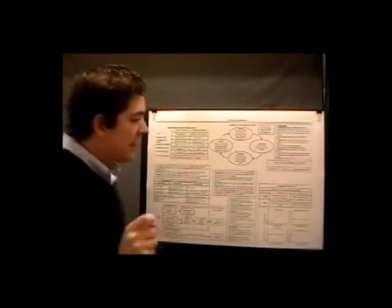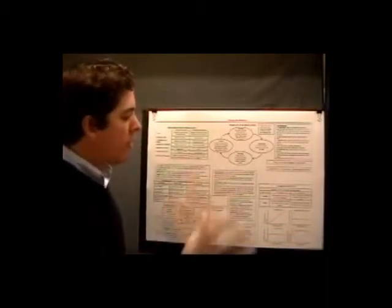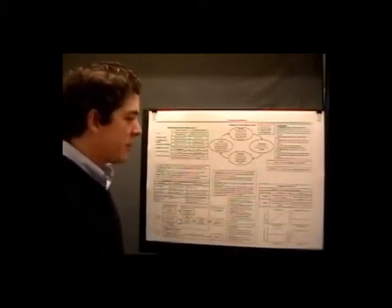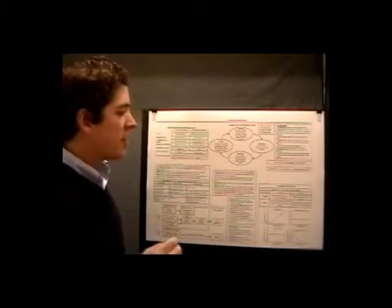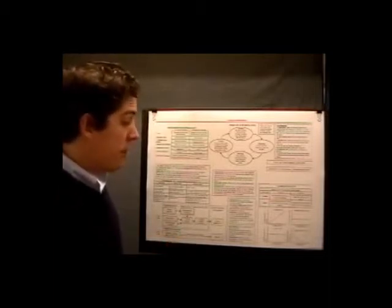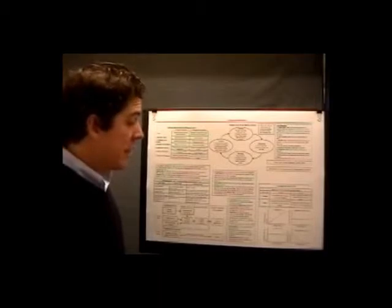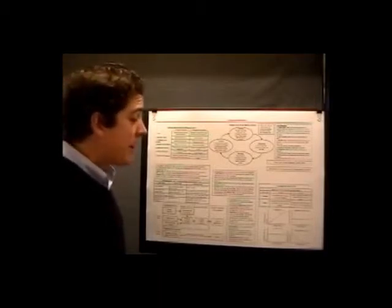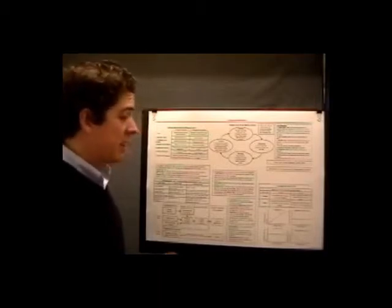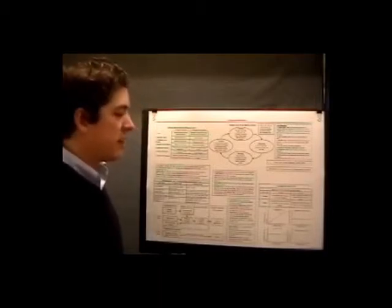Manufacturing overhead consists of all the manufacturing costs other than direct materials and direct labor. These costs include indirect materials that are part of the finished product but cannot be easily traced to it, and indirect labor costs that cannot be physically or conveniently traced to the creation of products.